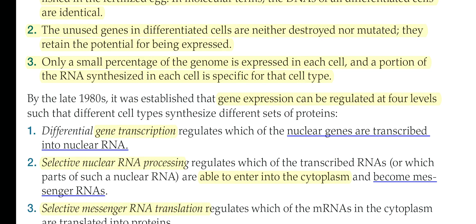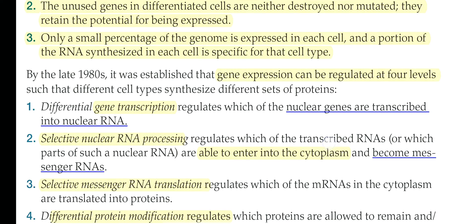Expression of silenced genes is possible with suitable transcription factors, some gradient of proteins, etc. The third point is that only a small percentage of the genome is expressed in each cell, and a portion of the RNA synthesized in each cell is specific for the cell type. Only a very small fraction of the genome is really expressed in particular differentiated cell types, and even that expression varies with time — in the early embryonic stage, during birth, during the post-embryonic stage — different stages of lifetime show different genomic expression, varying in amount and type.